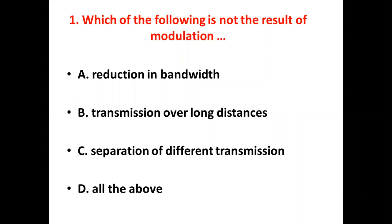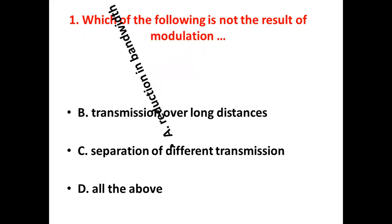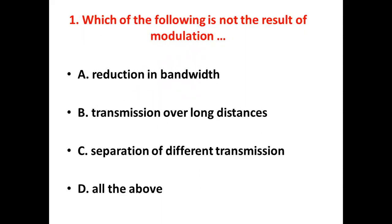Which of the following is not the result of modulation? Option A: Reduction in bandwidth. Option B: Transmission over long distance. Option C: Separation of different transmissions. Option D: All of the above. Answer: Option A, Reduction in bandwidth.